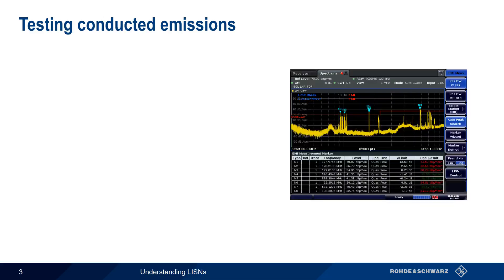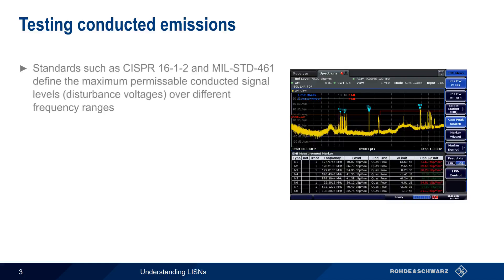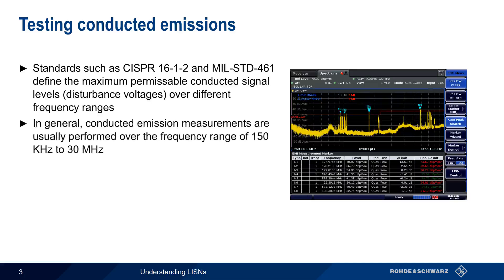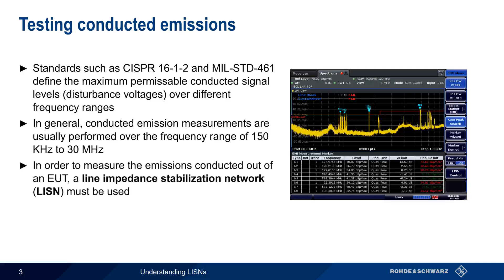So how do we test for conducted emissions? EMC standards, such as CISPR-16-1-2 and MIL-STD-461, define the maximum permissible conducted signal levels, also called disturbance voltages, over different frequency ranges. For the most part, conducted emissions testing is carried out over the frequency range of 150 kHz to 30 MHz. In order to measure the emissions from an EUT, or equipment under test, a special device called a Line Impedance Stabilization Network, or LISN, must be used.